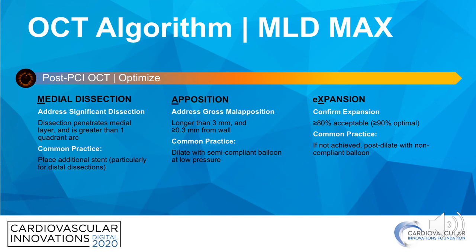Following stent implantation, you want to assess if there are any areas that require further optimization. When you start doing OCT, you'll appreciate dissections, malapposition, and tissue protrusion that wouldn't be angiographically apparent — and just because you identify it doesn't mean it requires treatment. Using the MLDMAX workflow, M for medial dissection: we advocate for treating dissection if it's greater than one quadrant and penetrates into the medial layer, which usually requires an additional stent. A small intimal dissection with a flap less than one quadrant typically does not require further treatment.